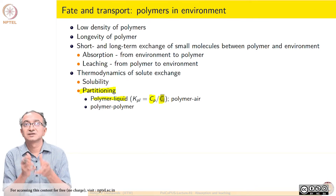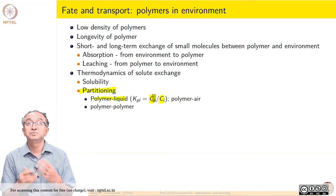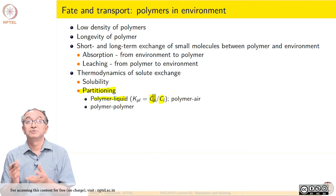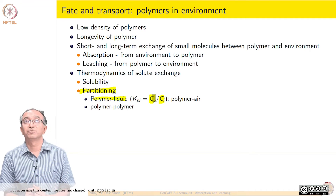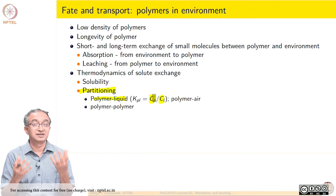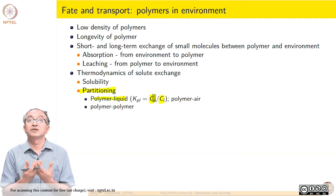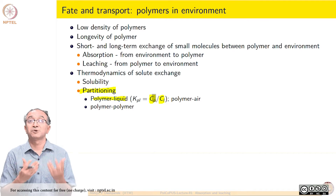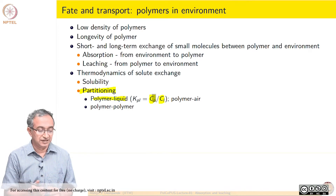If we start with the solute in the liquid phase, it will go to the polymer phase if Cp is very high. If Cp is zero, it will remain in the liquid phase and is not being partitioned between liquid phase and polymer phase. So each solute will have a characteristic partitioning coefficient. Depending on concentrations in the liquid phase and polymer phase, or the air-vapor phase and polymer phase, or even between two polymer phases — since we have multi-layer films and polymer blends — polymer-polymer exchange is also possible. So partitioning of a solute between these two phases is equally important.